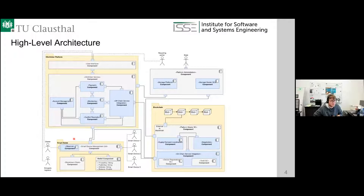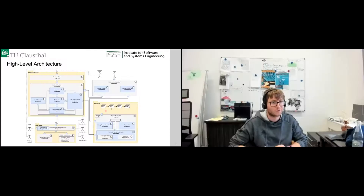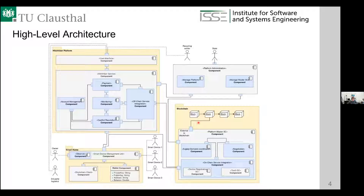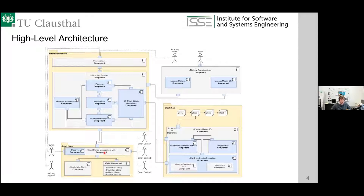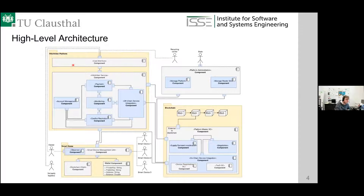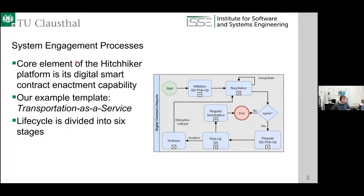We focused on the architecture and behavior of such a platform. Our platform has three main components: a blockchain component for registration of all smart devices, managing the deposit, and executing smart contracts so that machines can deal with each other; a smart home component with an observer that measures the health state of all devices, each device having a wallet connected to the blockchain; and the hitchhiking platform itself for matchmaking between smart devices, enabling transportation or recycling as a service. The behavior is divided into six stages — installation, negotiation, and so on — based on smart contracts.